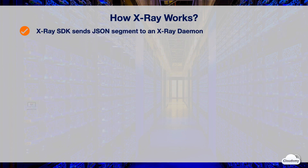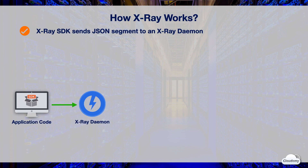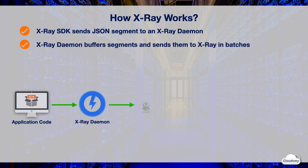To use AWS X-Ray in your application, you can add the X-Ray SDK to your application code. The X-Ray SDK collects application status data and sends JSON segments to an X-Ray daemon. A segment provides details of requests, resource information, and details about the work done. The daemon process buffers segments in a queue and sends them to X-Ray in batches.